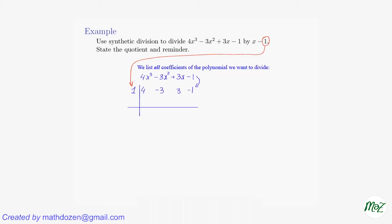I leave an empty line, and the answer will be in the third line. The process mimics long division, but it's much more efficient and much faster. So this leading coefficient gets carried over without any work — I'll just carry the leading 4 down.